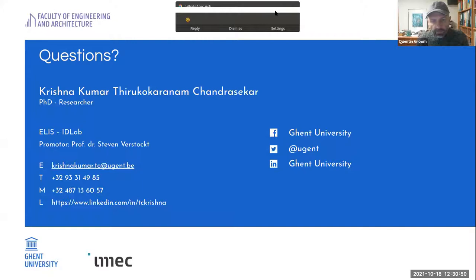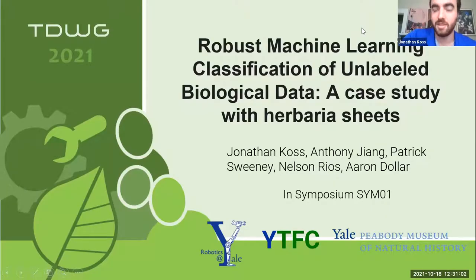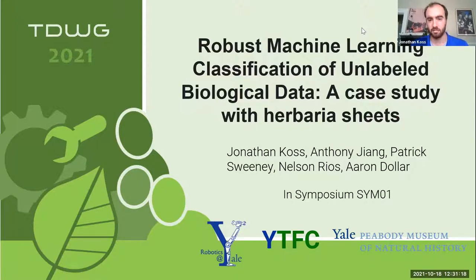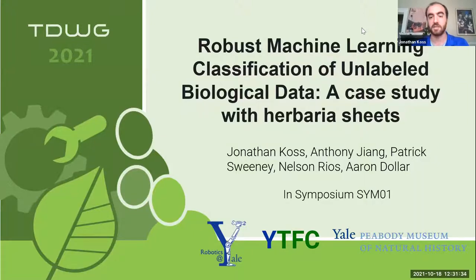Now we're moving on to Jonathan Koss. I'm going to be talking about an issue that was brought up earlier: once we have these machine learning techniques for labeling datasets of herbarium sheets, how can we actually take these algorithms and use them on a new untrained dataset to come up with labels that we're confident enough in that they can actually be considered the truth — as if they were hand-labeled — and used in further research.